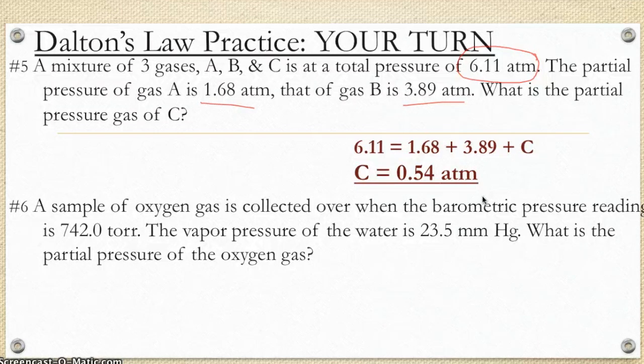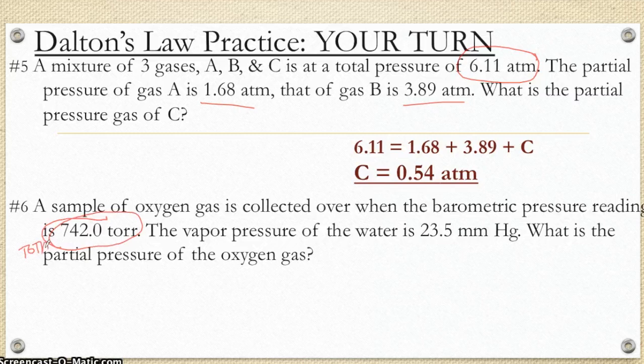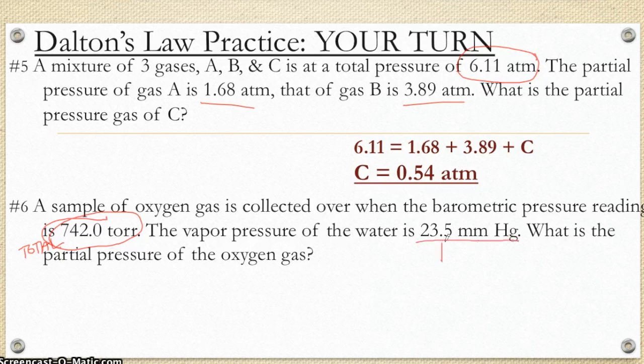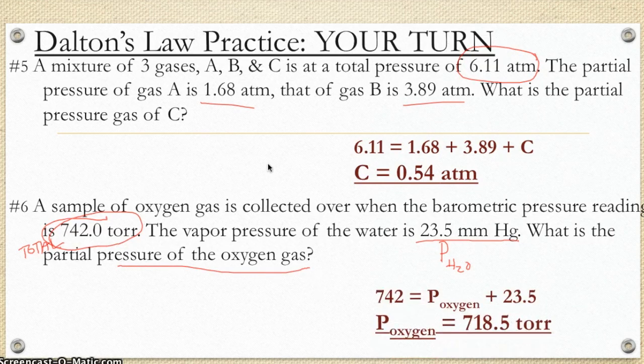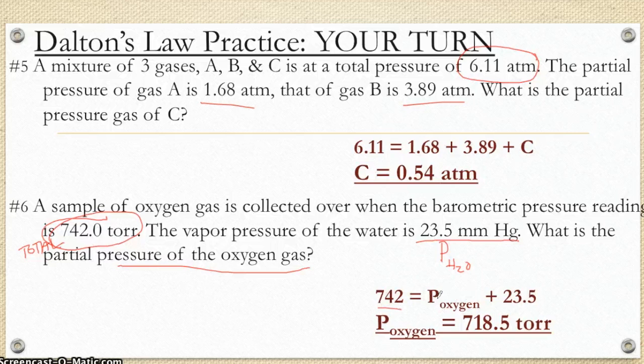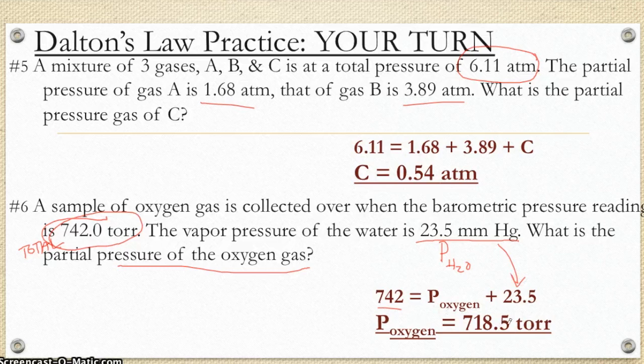Second problem now is involving the lab setup. So it's a wordier question. It looks more complicated, but it's still the same exact idea. Barometric pressure reading means this is the total. Vapor pressure of water given the temperature means this is my pressure coming from just the water. And I want to know what is the pressure of the other component of that mixture. So since my 742 is the total on here, there's my total. That total is equal to the pressure of the oxygen, plus the pressure coming from the water evaporating. Subtract them. I have a pressure of 17.5 torr coming from just the oxygen.